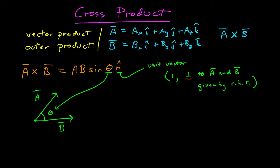If the unit vector is perpendicular to A and B, that means it is perpendicular to the plane containing A and B. Here A and B is in this plane, which means that the unit vector is going to either point out of the screen or into the screen. And that's given by the right-hand rule.